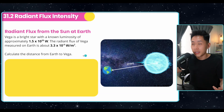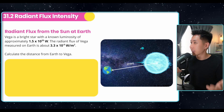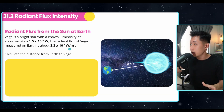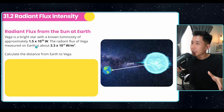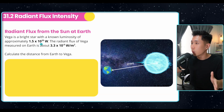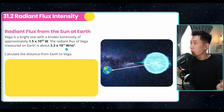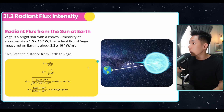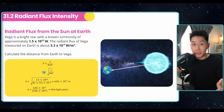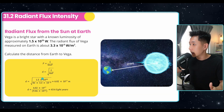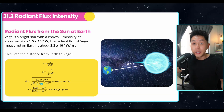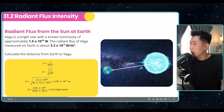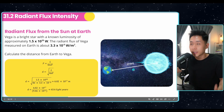Let's solve a question. Vega is a bright star with a known luminosity, and the radiant flux is given — calculate the distance. If we know the luminosity and the radiant flux, we can calculate the distance between the two objects. Using the formula, make d the subject, substitute the values, and then divide by the appropriate amount to get the distance in light years. That's how far Vega is away from us.